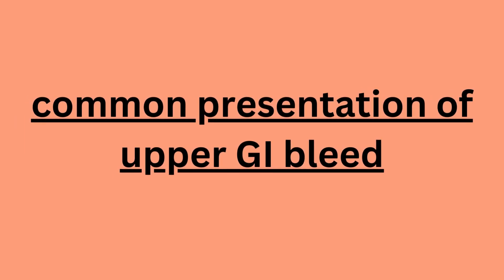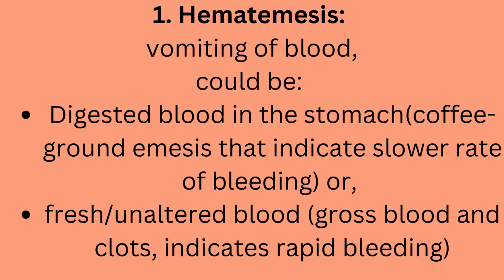Common presentations of upper GI bleed. Number one: hematemesis — vomiting of blood. This could be digested blood in the stomach, presenting as coffee ground emesis indicating a slower rate of bleeding, or fresh unaltered blood with gross blood and clots indicating rapid bleeding.